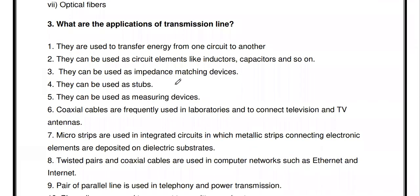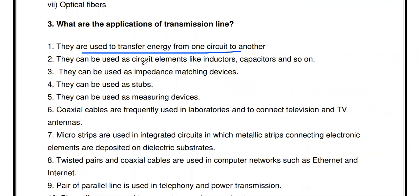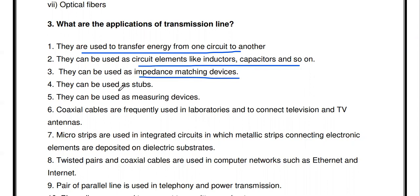What are the applications of the transmission line? It is used for various purposes. First, it is used to transfer energy from one circuit to another. They can also be used as circuit elements like inductors and capacitors. We can use the transmission line as a circuit element instead of an inductor or capacitor. They can also be used as an impedance matching device — to provide impedance matching between two circuits. They can be used as a stub — single stub and double stub.